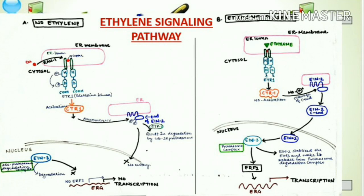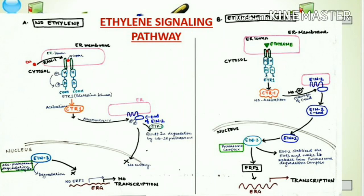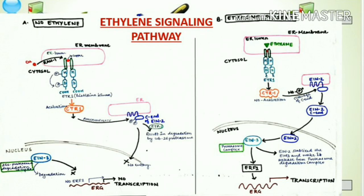EIN2 is a very important transmembrane protein that stabilizes the EIN3 transcription factor present in the nucleus. But because degradation of EIN2 has taken place, there is no one to stabilize the EIN3 transcription factor in the nucleus. EIN3 remains bound with the 26S proteasome degradation complex, so without EIN2 to stabilize it, ubiquitination and proteasomal degradation of EIN3 occurs, resulting in no transcription of ethylene-responsive genes.